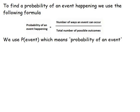Now to find the probability of an event happening, we use the following formula. So the probability of an event happening is equal to the number of ways an event can occur divided by the total number of possible outcomes. When we're working and when we're doing our answers, we don't tend to actually write the probability of something. We tend to write P, then in the brackets, the event. And that just means probability of an event.